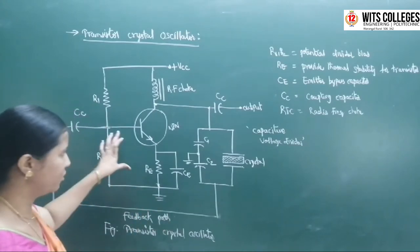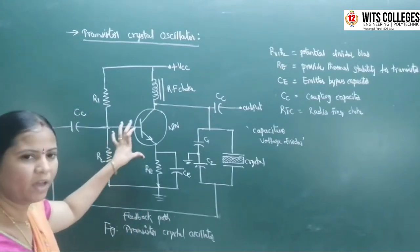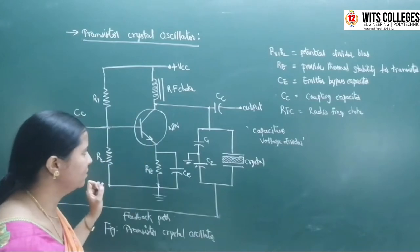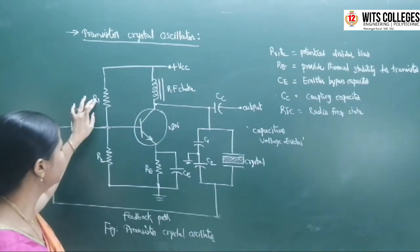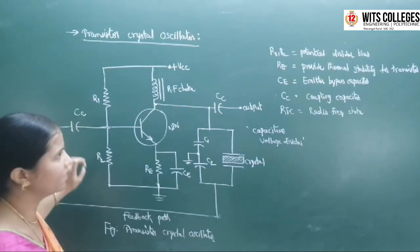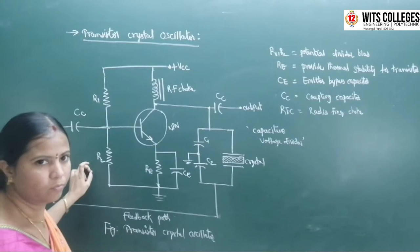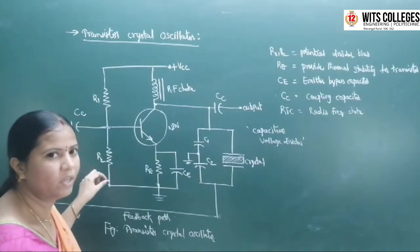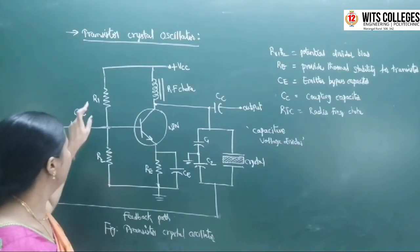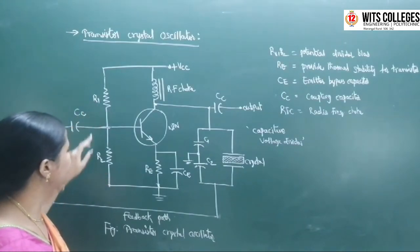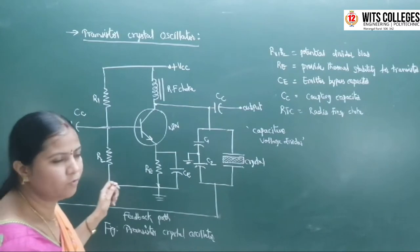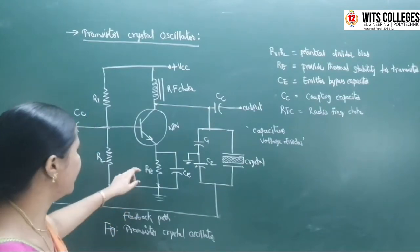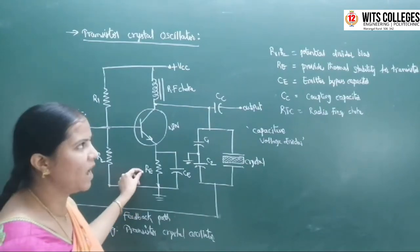Coming to the circuit diagram, here we are taking an NPN transistor. The transistors R1 and R2 — coming to the construction of the circuit, R1 and R2 will provide potential divider bias.